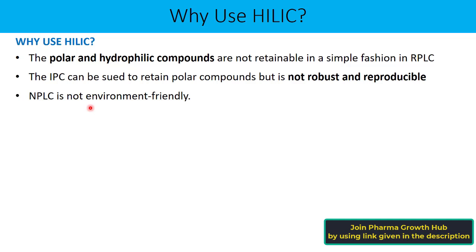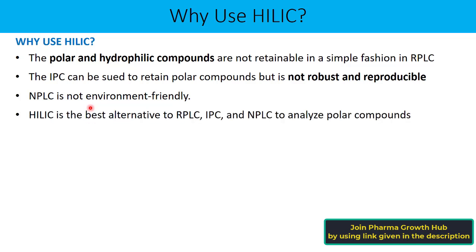Normal phase liquid chromatography can certainly retain polar compounds, but it uses solvents that are not environmentally friendly, like N-hexane, dichloromethane, or chloroform. The cost of these solvents is also quite high compared to the aqueous-organic phases used in HILIC. So here too, HILIC wins over NPLC. HILIC is the best alternative to RPLC, IPC, ion chromatography, and NPLC for analyzing polar and hydrophilic compounds.